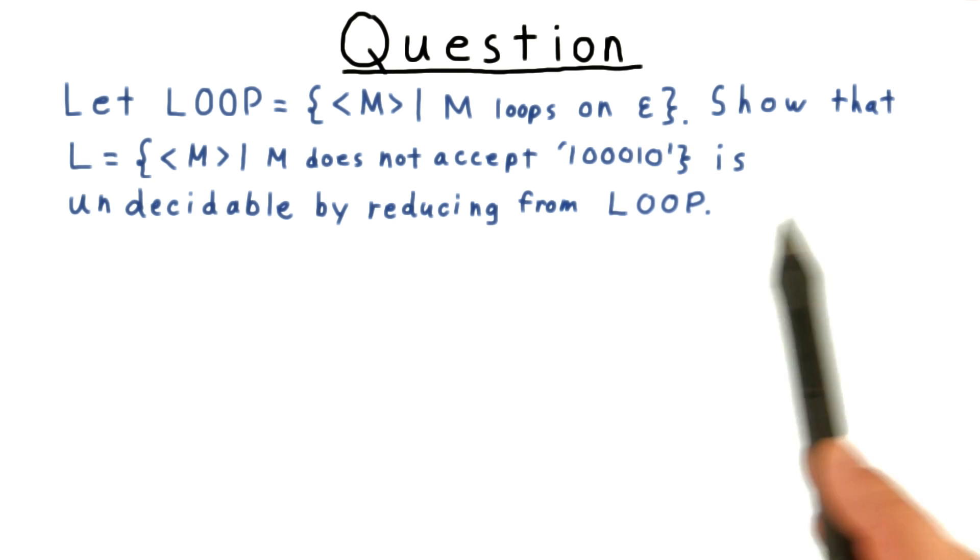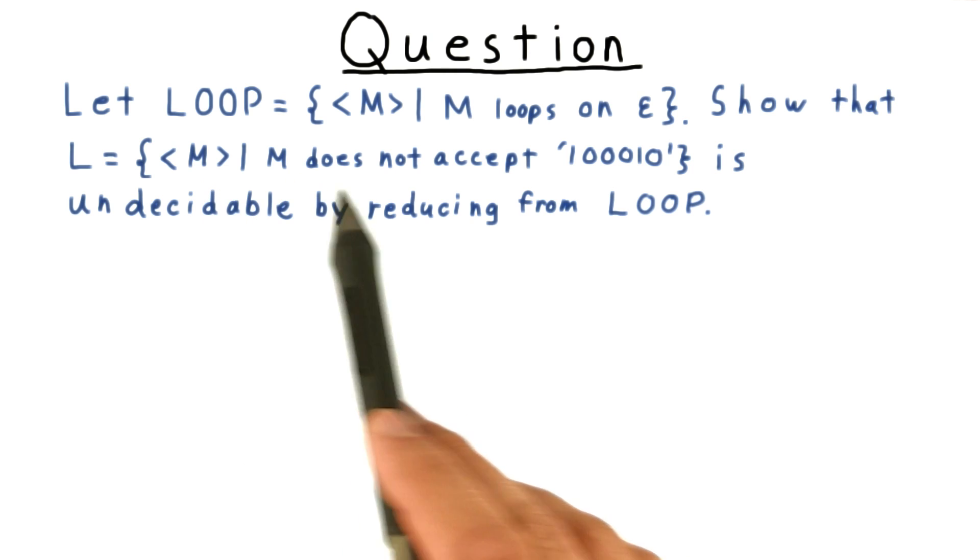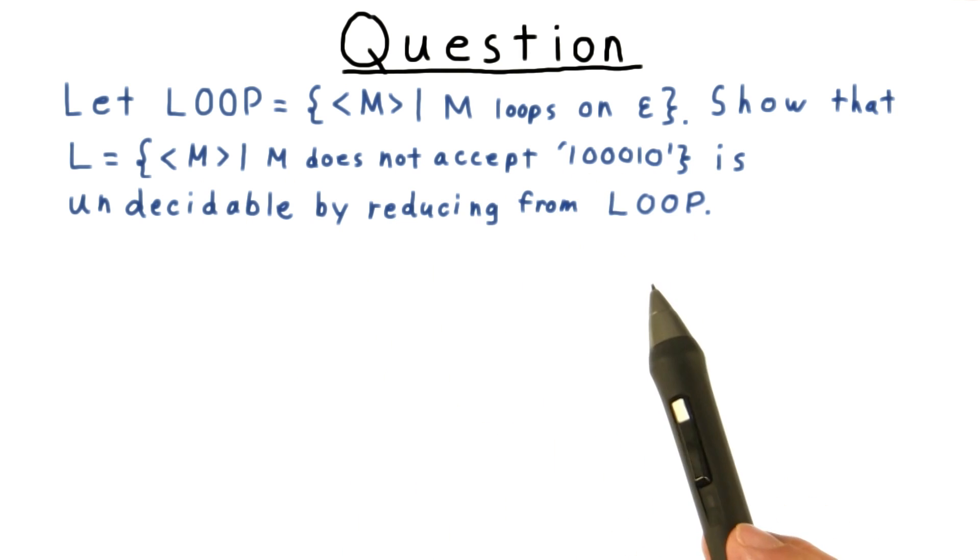And we want to reduce that to the language L, which consists of Turing machines that do not accept the number 34 written out in binary.